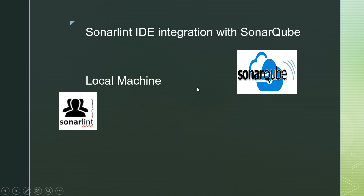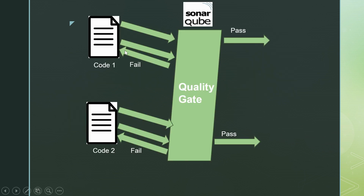All team members are supposed to send their project onto one SonarCube server, and over there all team members' code will be analyzed as per the quality standards set in the quality gate. In this slide, you can see the code of a particular team member and the code of another team member. On SonarCube server, we can have a quality gate where we can set some quality standards. The team lead can create a quality gate on the SonarCube server with all the expectations related to quality, and all team members' code is supposed to meet those expectations. All team members can send their project onto the SonarCube server, and the code of different team members will be analyzed for a common set of quality standards.